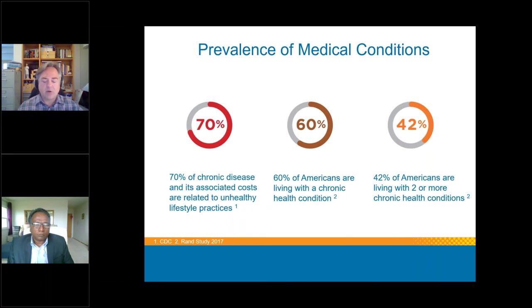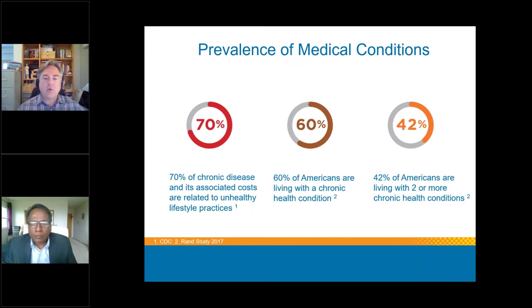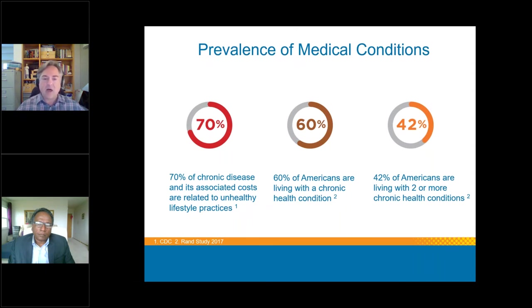There are a lot of chronic medical conditions in the United States. The CDC states that 70% of chronic diseases and their associated costs are related to unhealthy lifestyle practices. 60% of Americans are living with at least one chronic care condition, and 42% of Americans are living with two or more chronic health conditions. Having all of these lifestyle-associated diseases makes telehealth a very convenient and appropriate way to check in on patients, encourage them to make necessary changes, evaluate their responsiveness to medications, and follow up with materials to reinforce treatment plans.